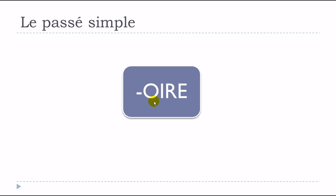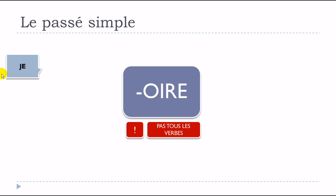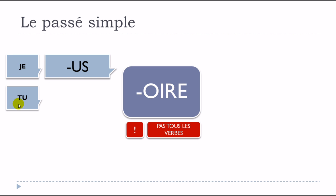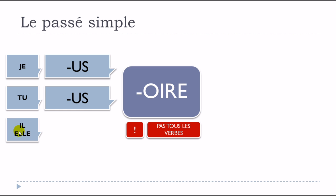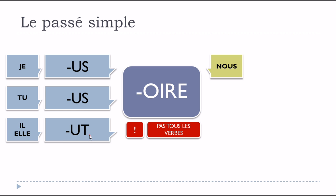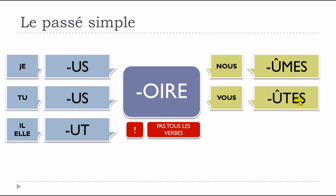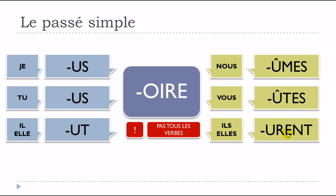Another category: verbs ending with OIRE — again, not all verbs but most of them. The endings go: je US, tu US, il/elle UT, nous Û-M-E-S, vous Û-T-E-S, ils/elles U-R-E-N-T. Then we continue with verbs that have their participes passés en U — same endings: US, US, UT, Û-M-E-S, Û-T-E-S, U-R-E-N-T.